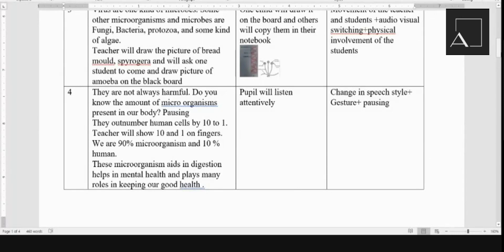Then I'll pause and then I'll say they outnumber human cells by 10 to 1, and then I'll show them that 10 to 1 on my fingers. So we are 90% microorganism and 10% human. These microorganisms aid in digestion, help in mental health, and play many roles in keeping our good health. So people will listen attentively. This is my change in speech style, gesture, and pausing.